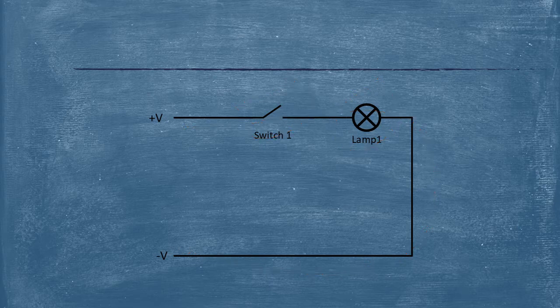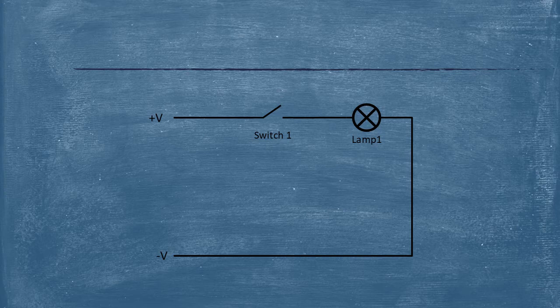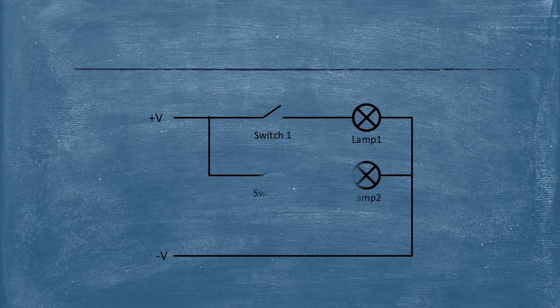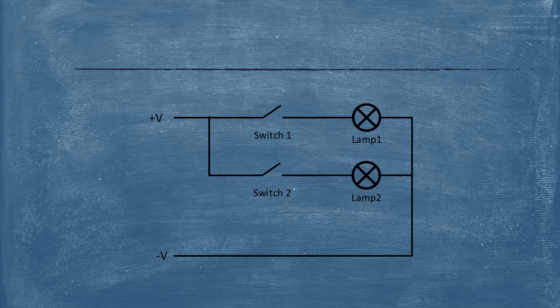But going back to the original lay theory that electricity always takes the shortest path. Here, it's simple, right? We've only got one switch, one path for electricity, but what if there's another path? Well, how does this lay theory work? If we can run the electricity through one light,